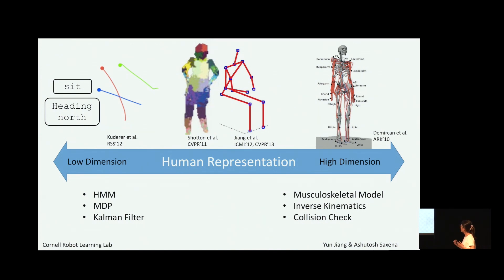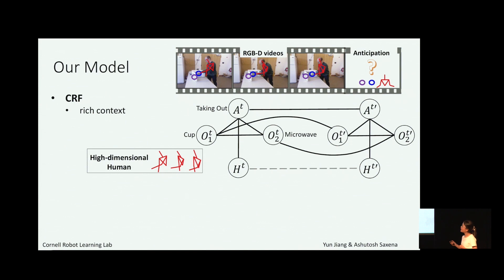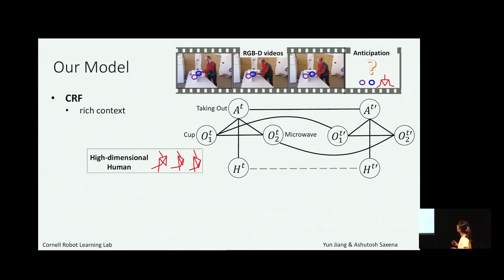Our model takes an RGBD video as input, uses computer vision techniques to track objects and humans, and uses a CRF graphical model to model activity, objects, and humans as nodes in a graph with their relations as edges, capturing rich context in the scene. However, modeling human-human relations in high-dimensional space can be very challenging: it can lead to overfitting, and the high dimensionality makes the search space for future possible human poses extremely large, making inference very inefficient.